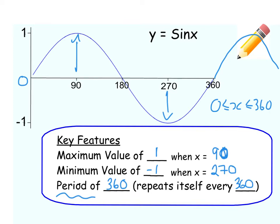One thing I want to point out: the maximum value is 1 and the minimum is minus 1. If you ever try to do shift sine of a number bigger than 1, it'll come up as an error on your calculator. This is why — because the highest number a sine graph goes to is 1, and that is why it will never let you do shift sine of 1.5 or shift sine of 2, for example.